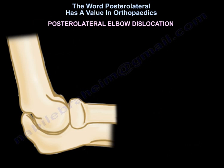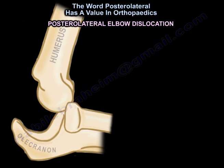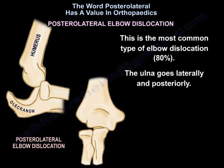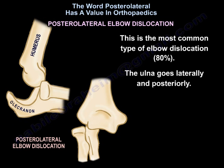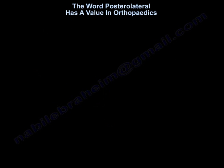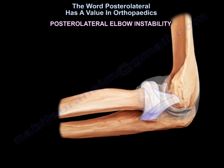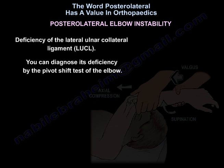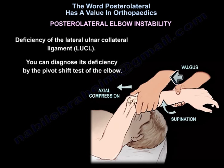The posterolateral elbow dislocation is the most common dislocation, occurring laterally and posteriorly. Posterolateral elbow instability occurs due to deficiency of the lateral ulnar collateral ligament, and you can diagnose its deficiency by the pivot shift test of the elbow.